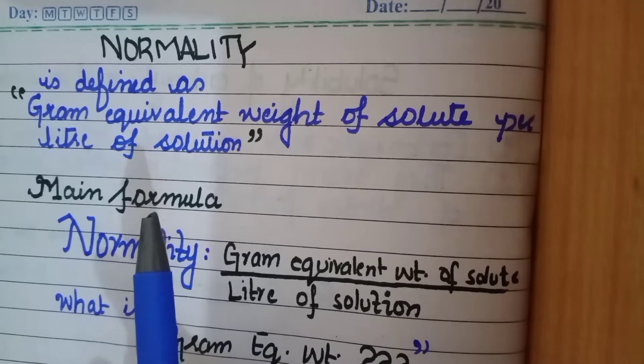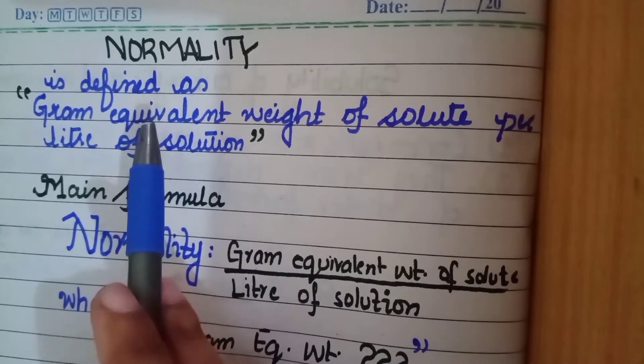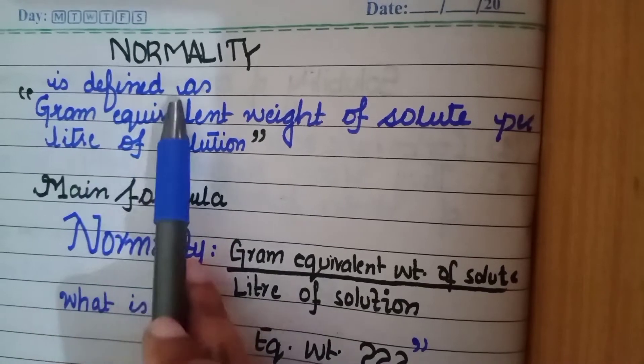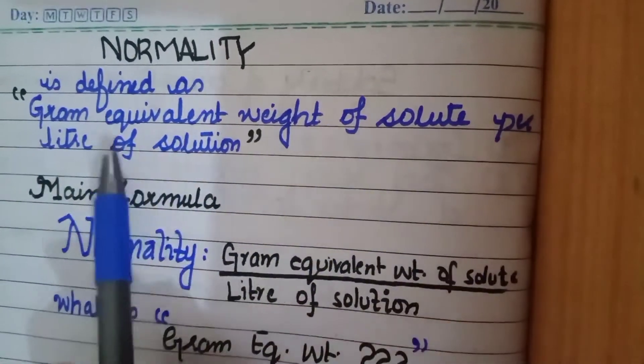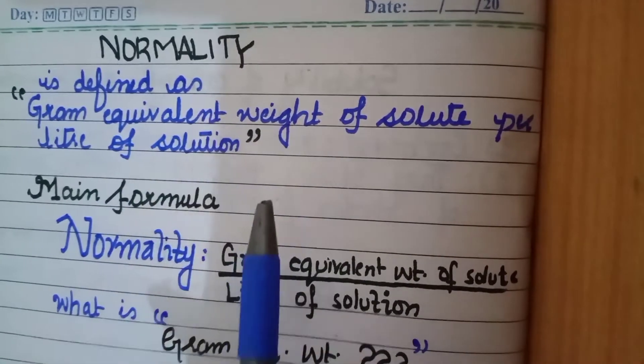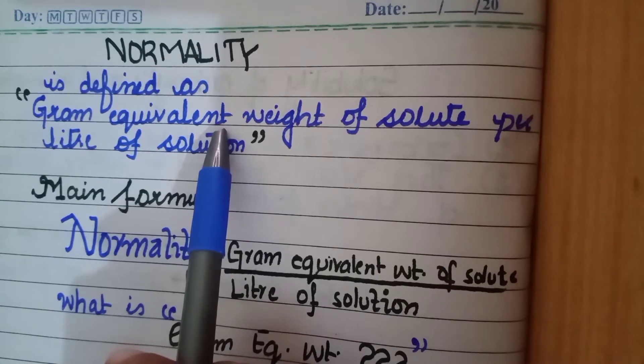Then I'll be discussing molarity and molality as well. Normality is, as we go for the definition of this, it is defined as gram equivalent weight of solute per liter of solution. Let's go into the main formula and the representation of this very definition.